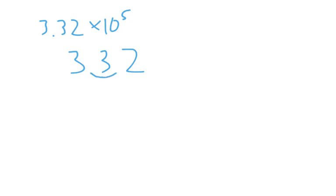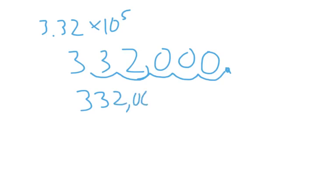So I'll take my number 3, 3, 2. I know the decimal's here, and I'm going to move it 1, 2, 3, 4, 5 spots. And I'll just fill in all those blank spots with zeros. And so I have the number 332,000. That's what it became.